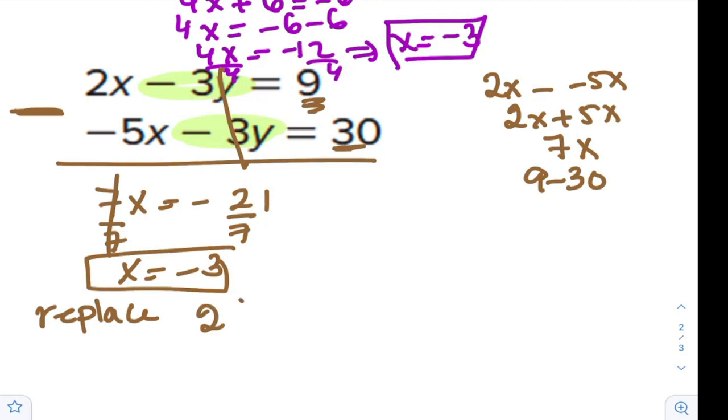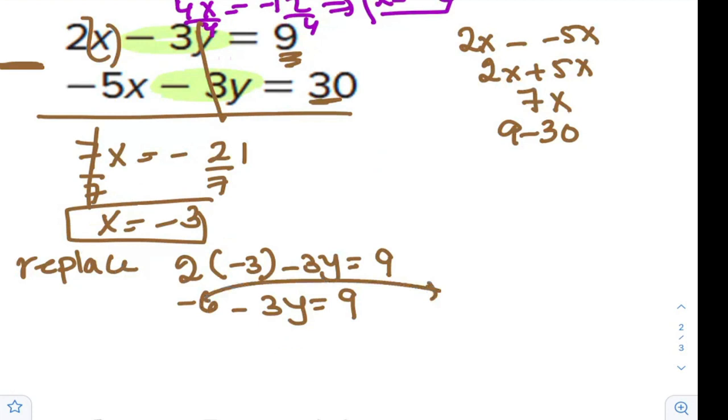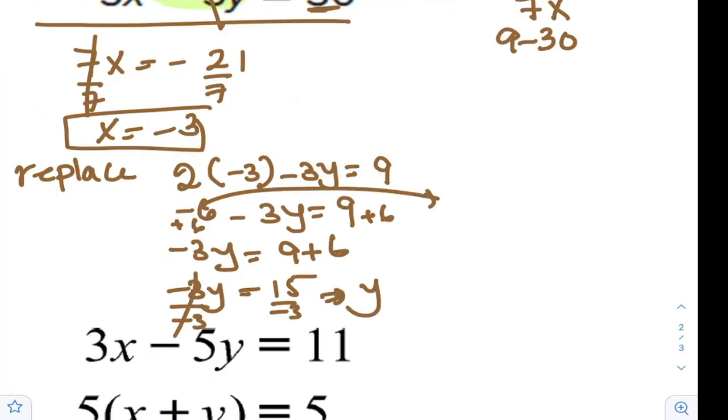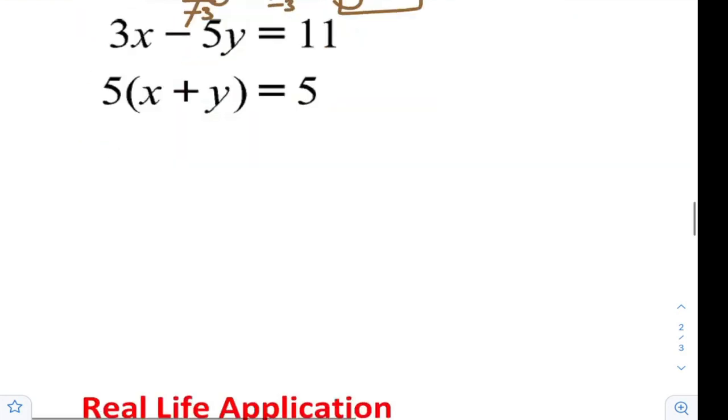After you find the x, replace, substitute in any. I will use the first equation, replacing the x by negative 3. Multiplication comes before addition or subtraction. Negative 3y is 9 plus 6, or you can do it this way, plus 6 both sides. Negative 3y is 15, and when you divide by negative 3, then y is negative 5. So the solution is negative 3 and negative 5.